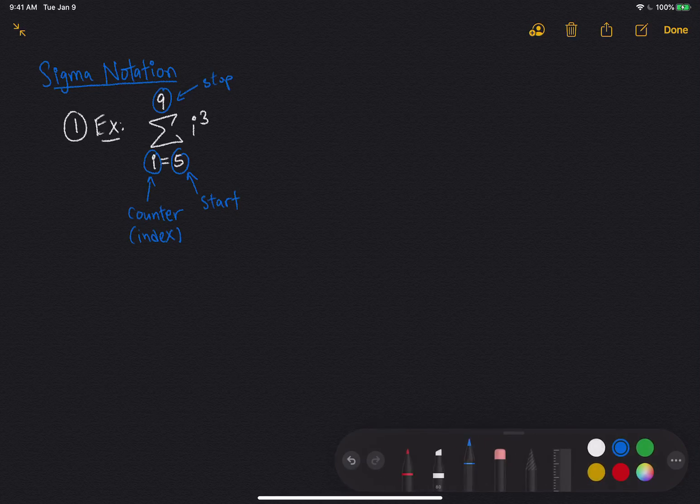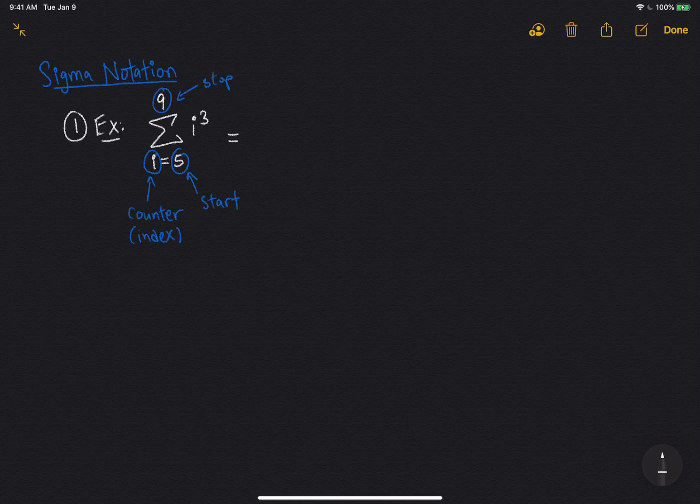So that means that the first term, you plug in i equals 5, so it's 5 cubed. And then you increase, you count up to 6, so the next term is 6 cubed, and you add it. The next term would be 7 cubed, and you add it. Then you add the next term, 8 cubed. And then the last term is 9 cubed, and you stop because of the 9 on the top of the sigma.